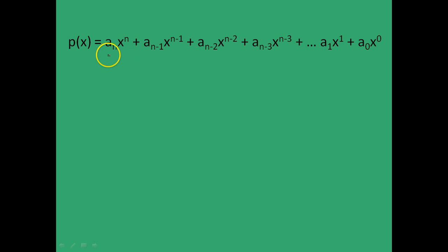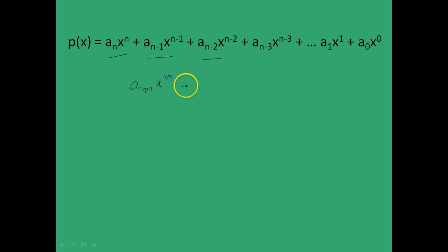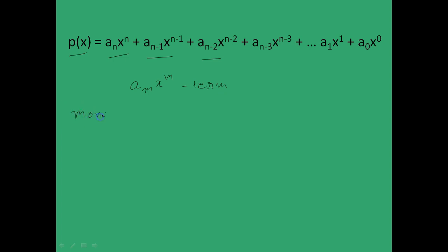Now there are some notations attached with a polynomial which I will introduce right now. First of all, any unit of the form amx to the power m is called a term. If your polynomial contains only one term, then the polynomial is called a monomial. Examples of that are 3x, 3x squared, minus 10x to the power 5, 3x to the power 5, etc.